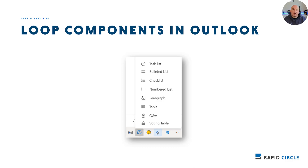Loop components are live, interactive, collaborative objects that you can embed in Microsoft Teams chats and now also in emails. When you send a loop component, everyone in that email can edit it inline and see changes instantly — so you can collaborate right inside an email message. To try it, compose a new email or reply to an existing one and insert a loop component via the toolbar, or copy and paste components between email and Teams chats. This is rolling out to Outlook on the web and Outlook desktop from early May to mid June.